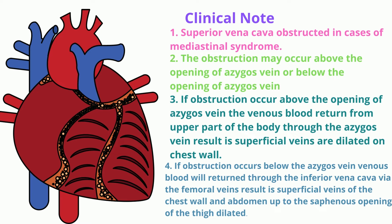If obstruction occurs below the azygous vein, venous blood will return through the inferior vena cava via the femoral veins. The result is dilation of superficial veins of the chest wall and abdomen, up to the saphenous opening of the thigh.